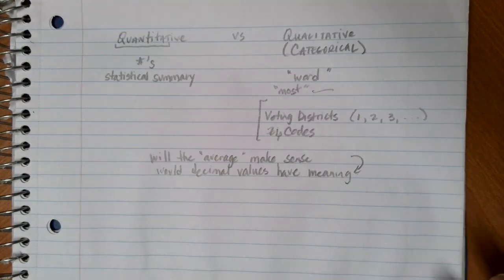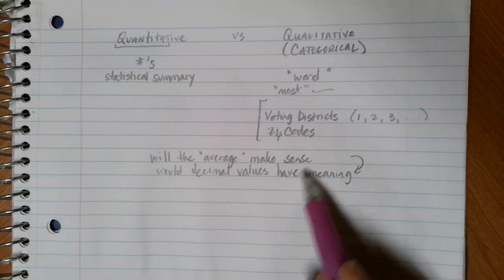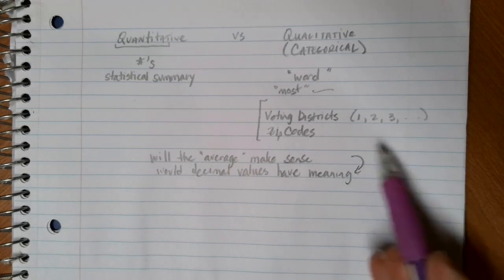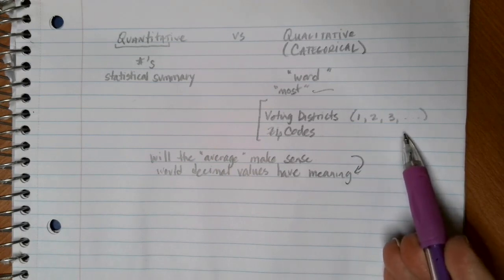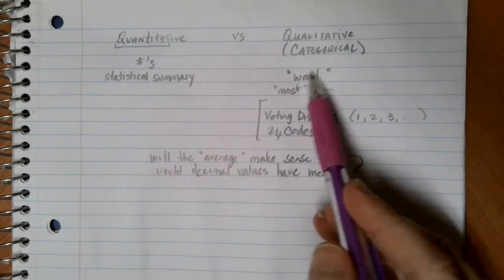A zip code average with a decimal isn't going to make any sense. Zip codes don't have decimals in them. Or voting district 1.7 isn't going to make any sense if you were to go through and calculate an average for something like that.